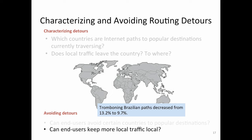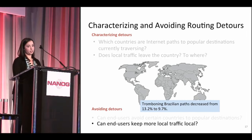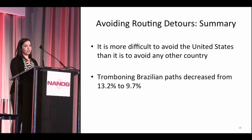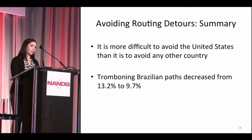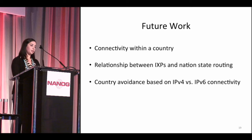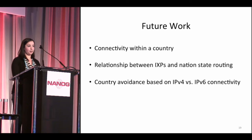On our last question — can end users keep local traffic local? We analyzed this using relays in the same country as the client and found that tromboning Brazilian paths decreased from 13.2% to 9.7%. This shows that using relays helps keep some fraction of paths from tromboning outside the country. In summary, it's significantly more difficult to avoid the United States than any other country, relays help keep local traffic local as evidenced by decreased tromboning, but some of the most prominent surveillance states remain the least avoidable.